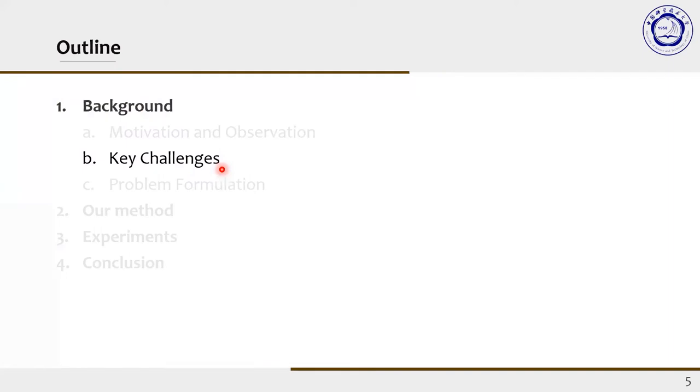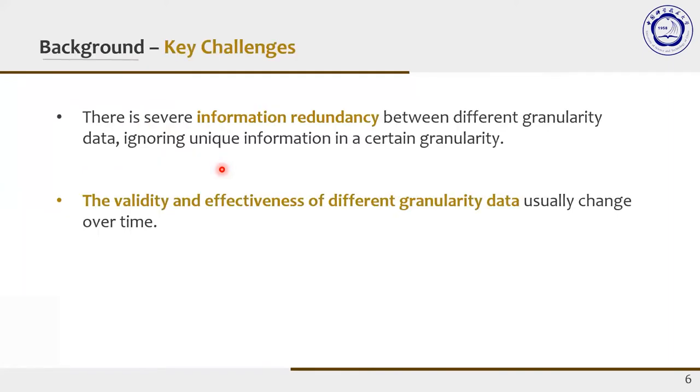Nevertheless, there are still some unique challenges. On the one hand, there is severe information redundancy between different granularity data, ignoring unique information in a certain granularity. Fine-grained data usually covers the information of coarse-grained data since the coarse-grained data are often obtained by the aggregation of the corresponding fine-grained data. Taking the stock trading as an example, the daily highest prices are calculated from the at least the prices of the minute-frequency data within the same day. Due to the information redundancy, a straightforward method that leverages multi-granularity data, such as combination or ensemble, can easily lead to the model being dominated by the redundant coarse-grained information.